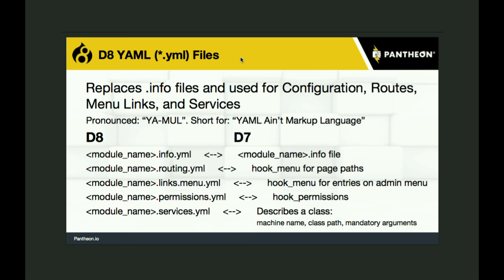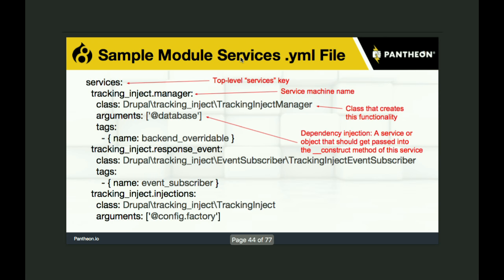YAML files in Drupal 8 — back in Drupal 7, everything in the .info file is now in the .info.yml file, prefaced by your module name. Every hook_menu is now in the routing.yml file. Every hook_menu item for the admin section is in links.menu.yml. Your permissions are in permissions.yml. And you have services.yml to describe the services your module offers. In a services YAML file, a service has a machine name, the class that handles it, the arguments it accepts, and tags indicating the group of technology it belongs to.